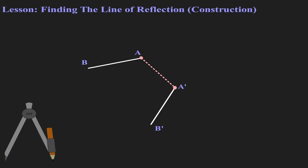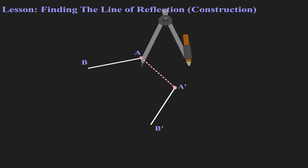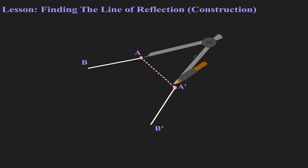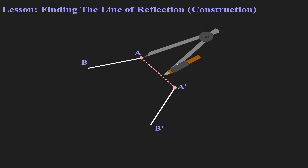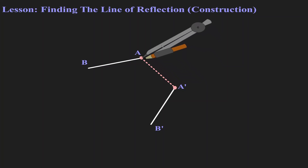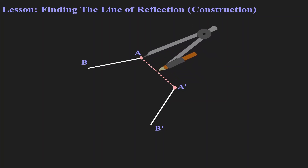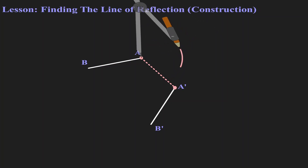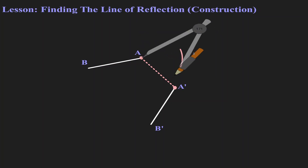Let's get our compass and place it on A. We want to open our compass more than half the length of the line segment A, A'. So this is about half — let's open it more than half, which is about there. Let's create a mark on the top and let's create a mark on the bottom.